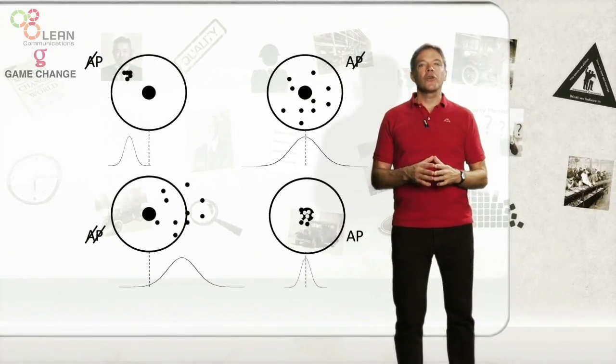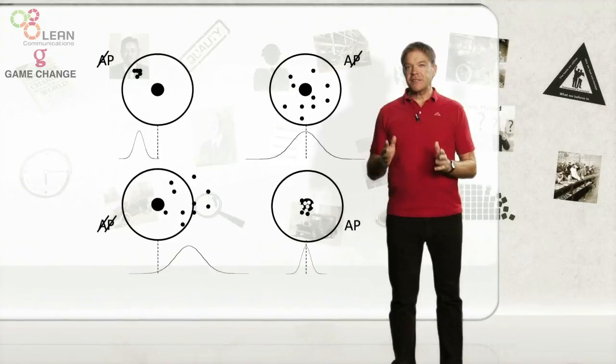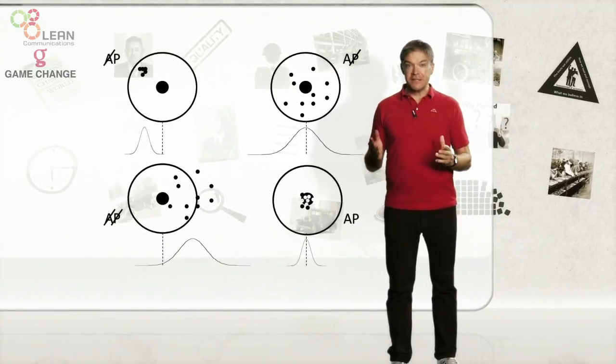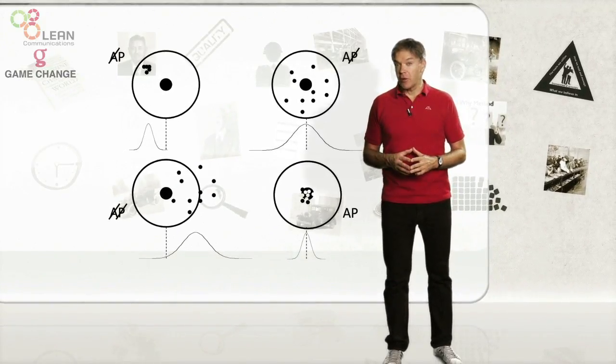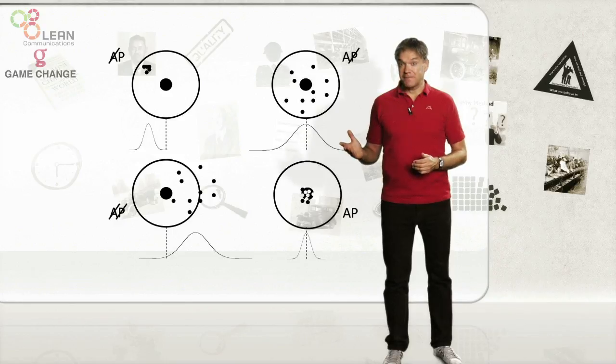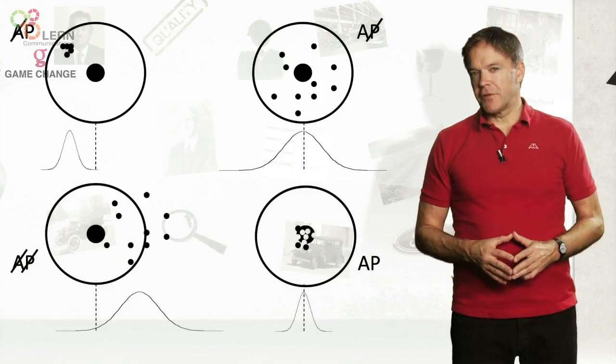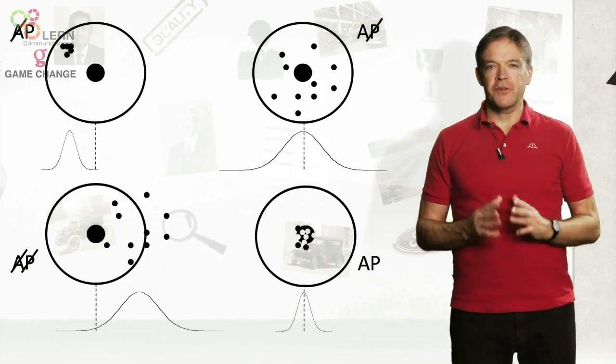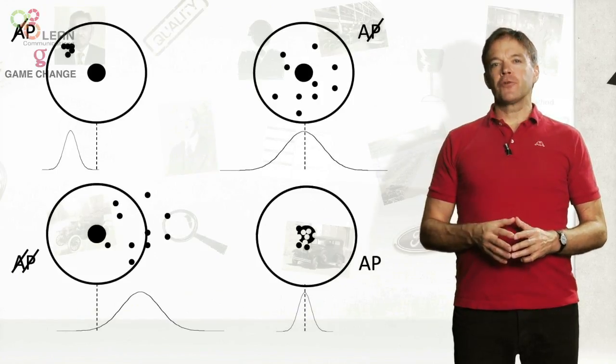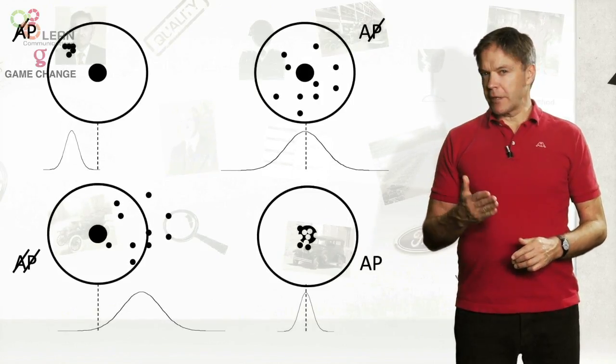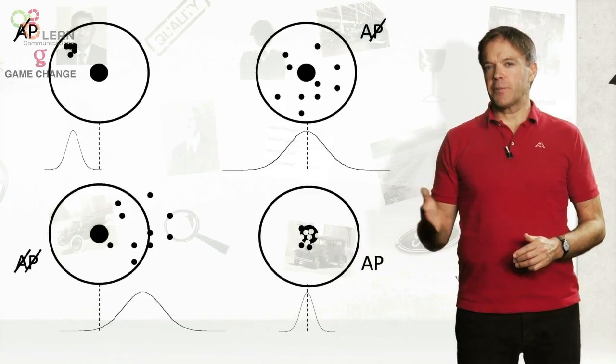Things that cause a process to be off target are easier to identify than things that cause it to be variable, not precise. Accuracy problems are easier to solve than precision problems. If you have the right knowledge, you can look at both accuracy and precision.